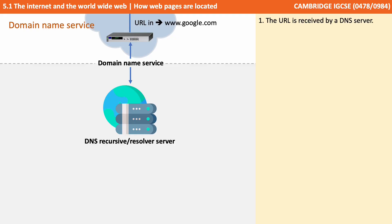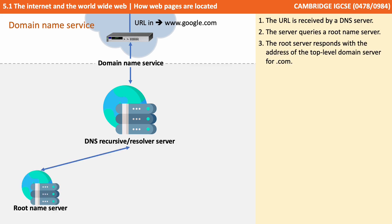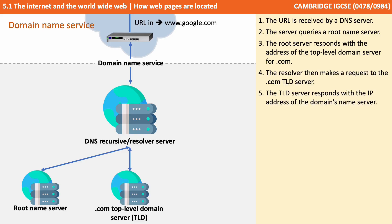In this example, the URL typed into our browser is www.google.com. This URL is received by a domain name server. The server then queries what's known as a root name server. The root name server responds with the address of the top level domain name server — in this case .com. The resolver then makes a request to the .com TLD (top level domain) server, which responds with the IP address of the domain's name server.